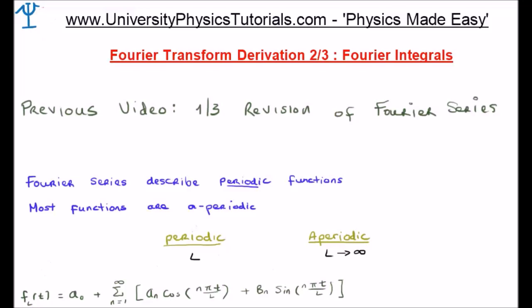In the previous video, video number 1 of 3, I did a revision of Fourier series. I discussed the definition of Fourier series and how we derived the coefficients a sub n, b sub n, and a sub 0. I also discussed the concept of basis functions, the cosines and sines, and the concept of the frequency domain. And finally I discussed the Fourier cosine and sine series, which will be very important towards the latter part of this particular video.